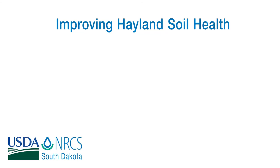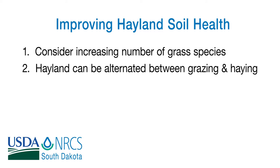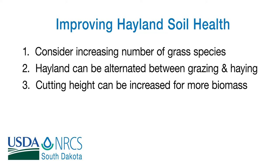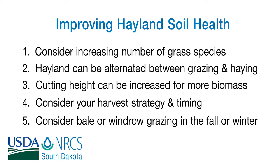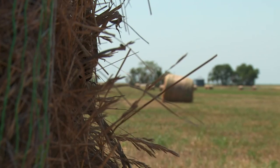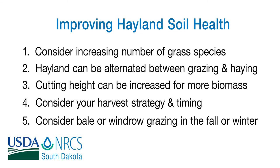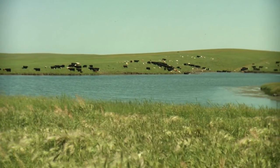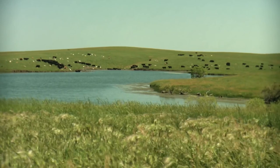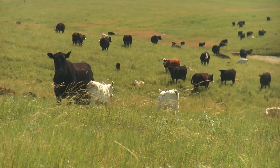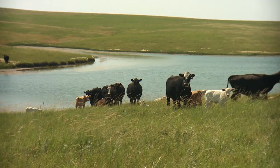Soil health on hayland can be improved in several ways. First, the plant community can be made more diverse by planting a higher number of species. Second, hayland can be alternated between grazing and haying, the cutting height increased to leave more biomass and cover, and the timing of the principal harvest varied from year to year. Another option is bale or windrow grazing in the fall and winter right in the hay field, returning much of the organic matter to the site and saving the cost of moving hay to storage. Lastly, it comes back to overall management — using animals as tools to achieve better soil health, potentially reducing hayland acreage by increasing grazing time. Managing the animals we can see, as well as the ones we can't see, provides the healthy soils underpinning a successful enterprise.